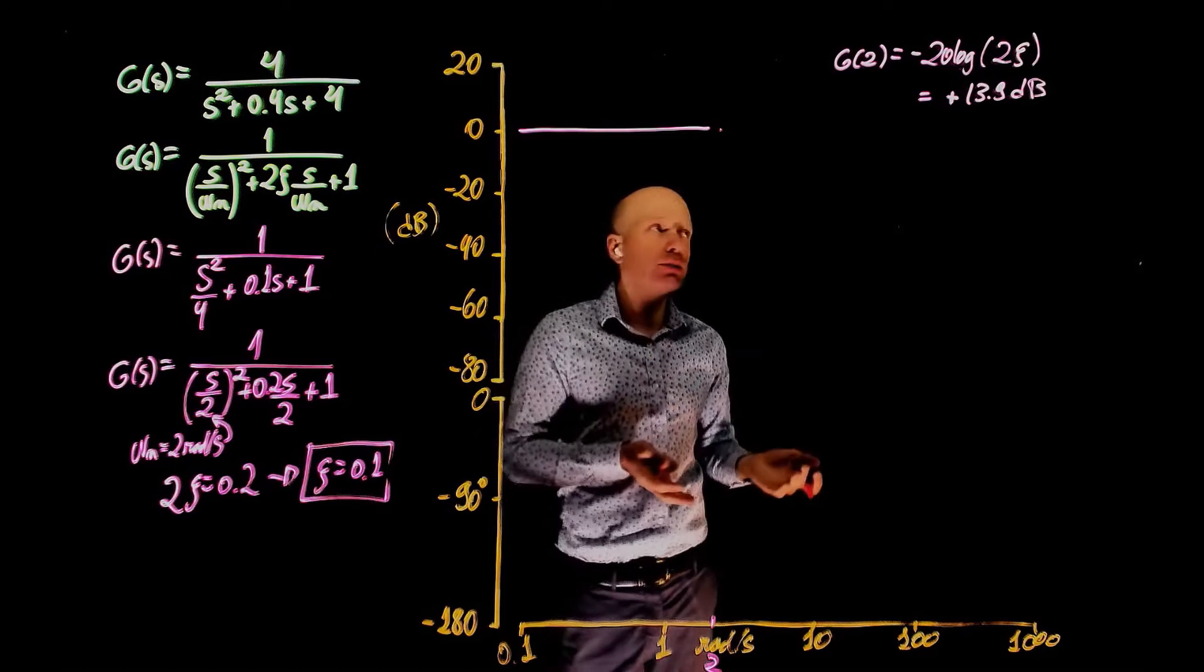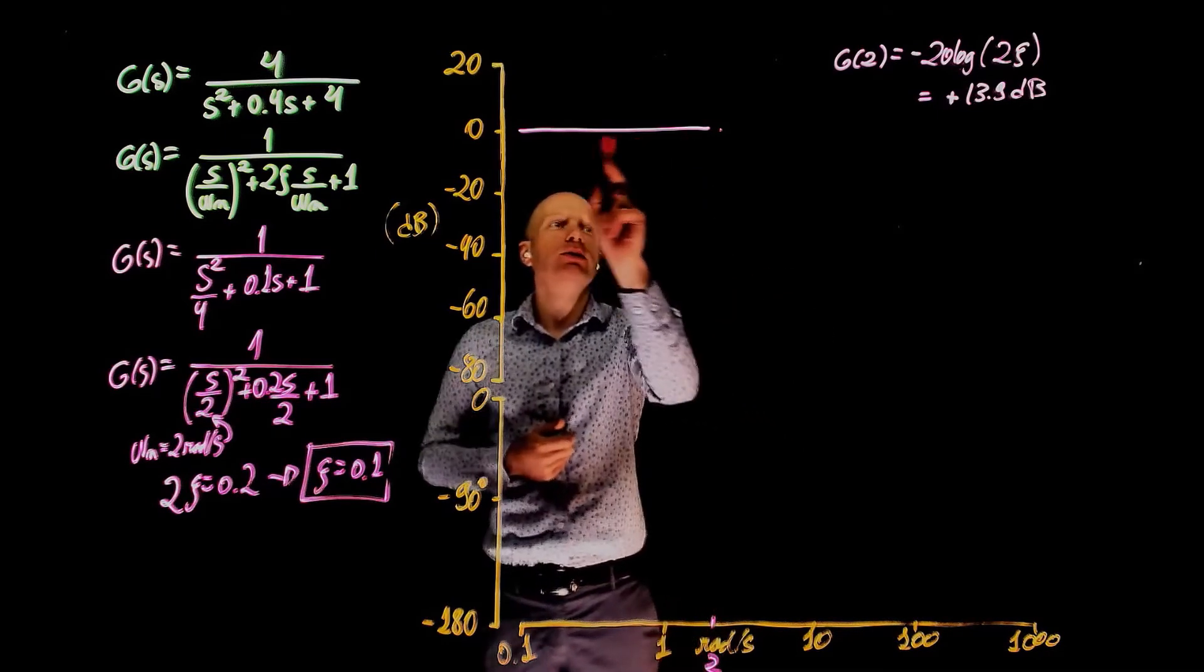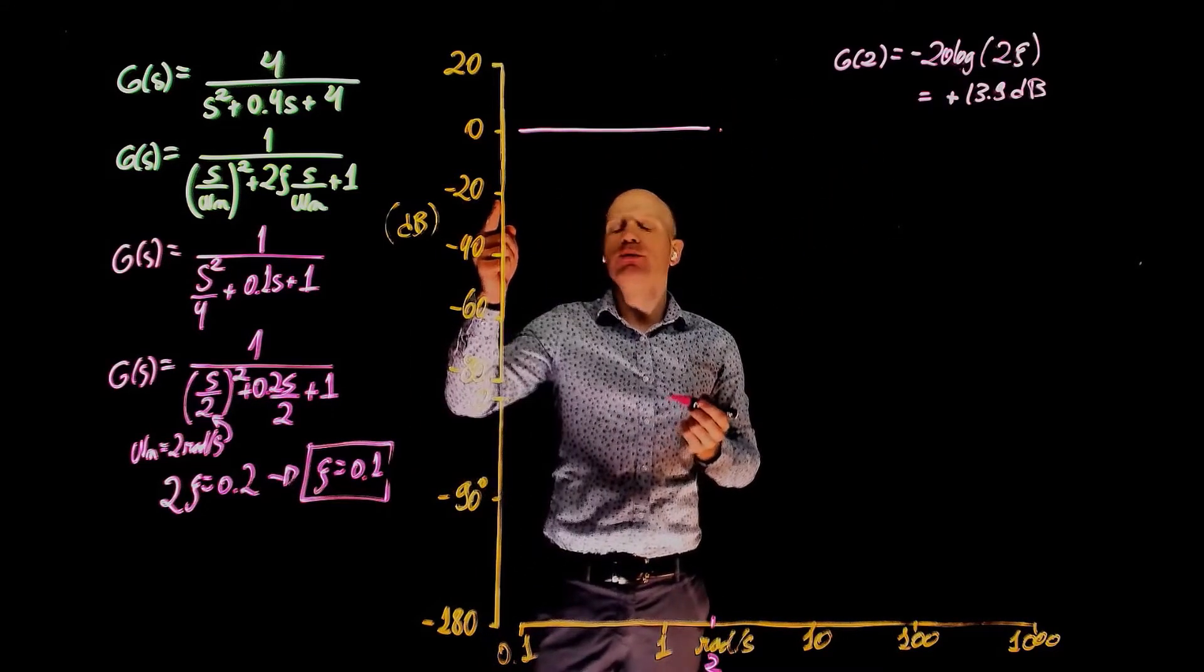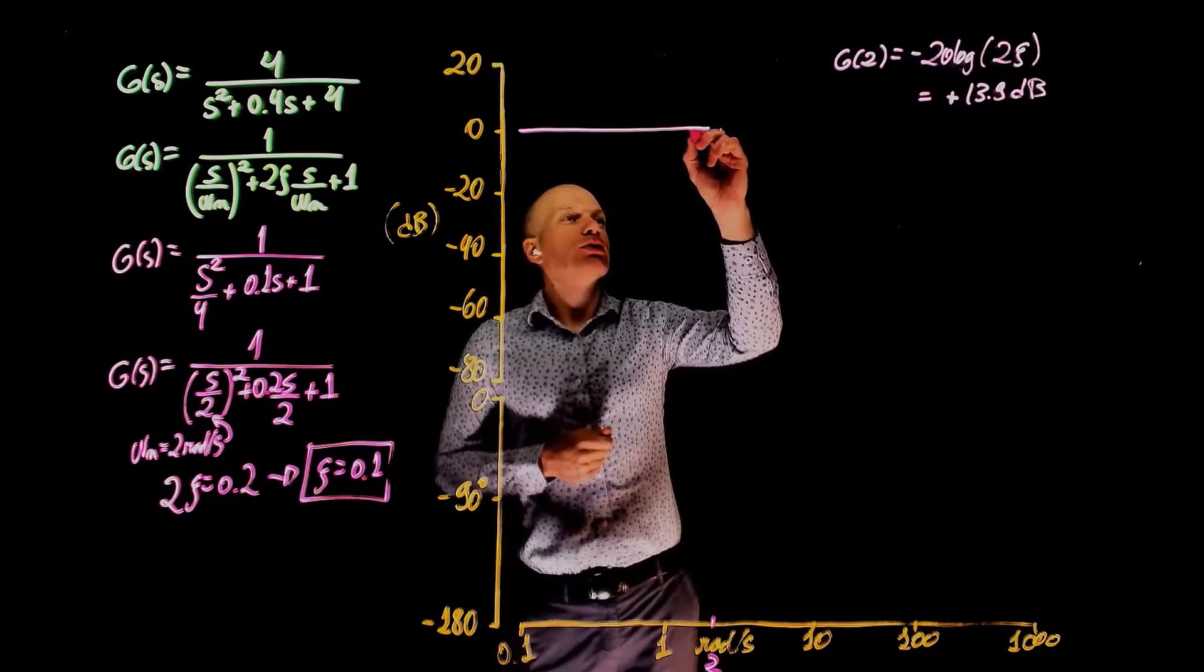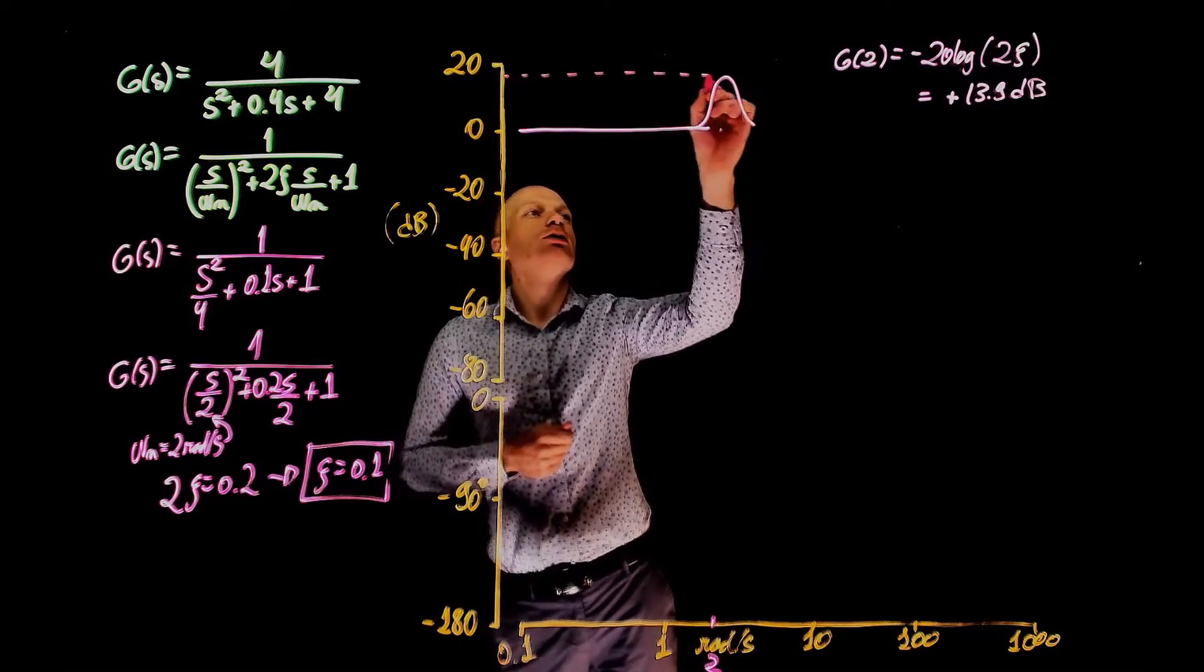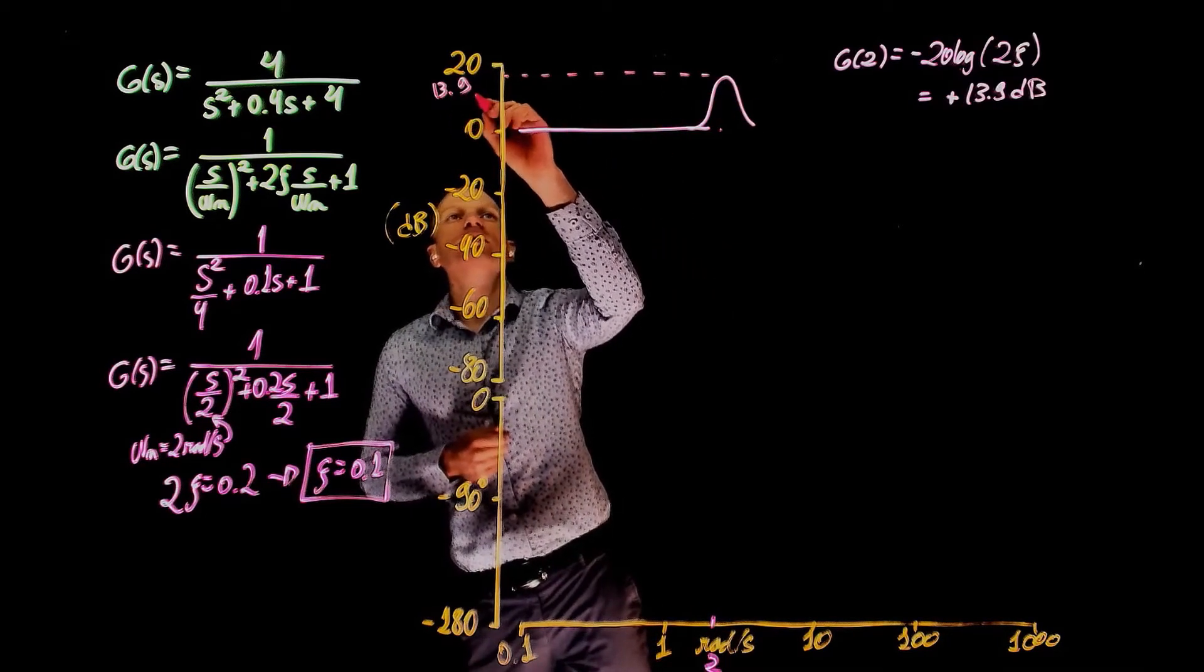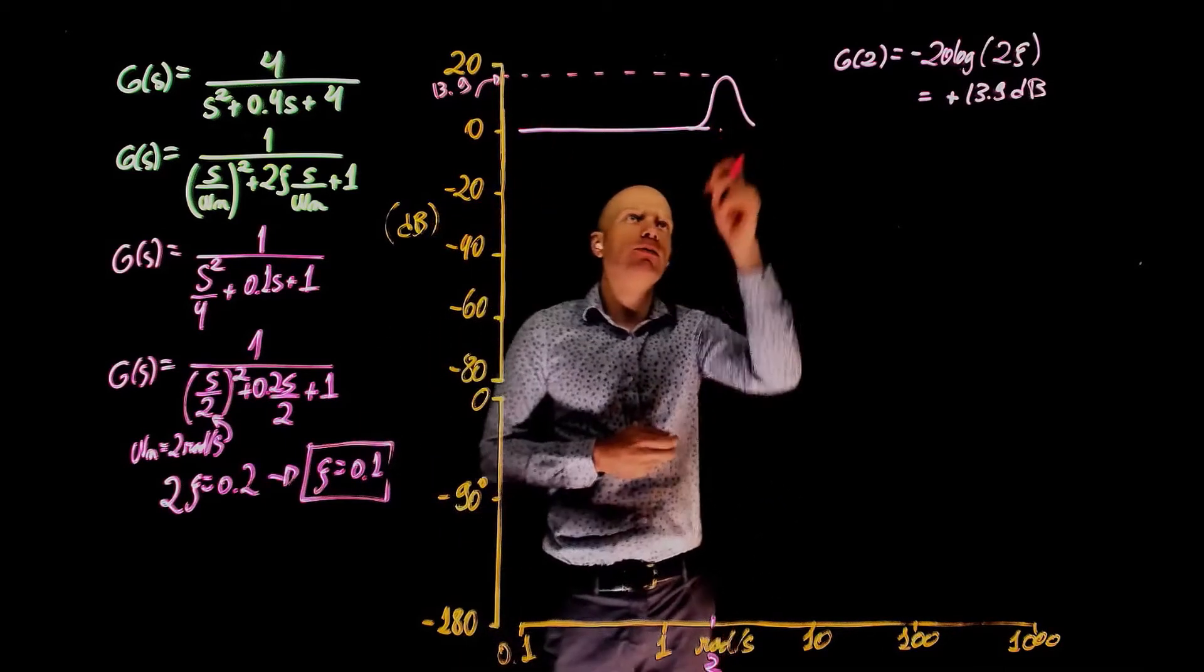This indicates that the transfer function at this specific point will go up by 13.9 decibels. It doesn't become 13.9 decibels, it goes up by 13.9 decibels. But because here we have 0, then it will end up at 13.9. So now the magnitude goes up and back down and it will reach the value of 13.9 dB at the cutoff frequency, and then comes down to the same value right before that bump.